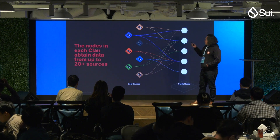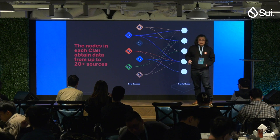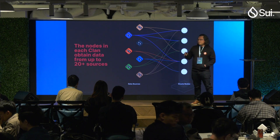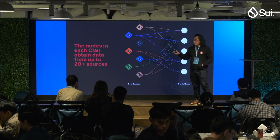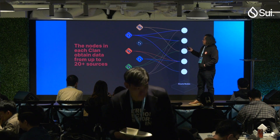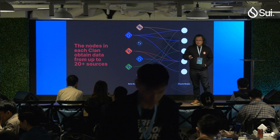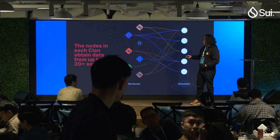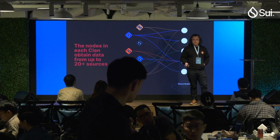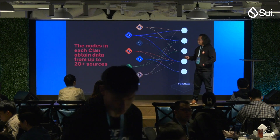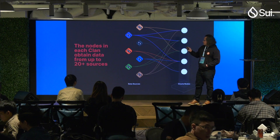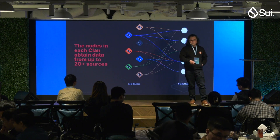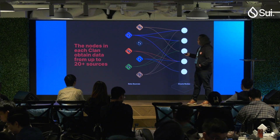Each clan itself might be on the order of over 100 nodes, and each node is going to be connected to up to 20 data sources. Instead of having every single node in a tribe listening to every single data source — which is not scalable — by utilizing randomness, randomly assigning nodes to different clans and randomly assigning different data sources to each node, we can have much more scalability.